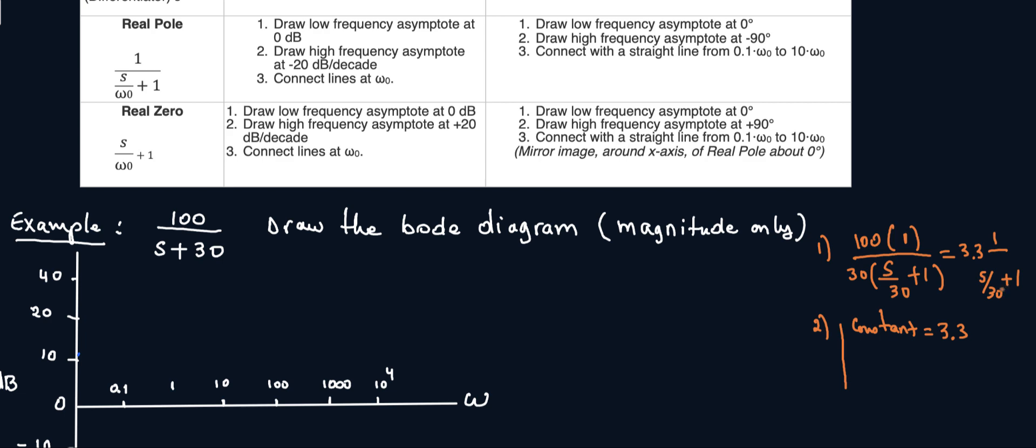At the bottom, do I have an s? Yes. I'm going to solve for s equal to zero. Set the denominator equal to zero and solve for s and that would be my pole. So s/30 + 1 = 0, therefore my pole, real pole here, is at s equals minus 30. So that's it for this particular transfer function. I only have a constant at 3.3 and I have a real pole at s equals minus 30. Now we can get started on drawing the diagram.